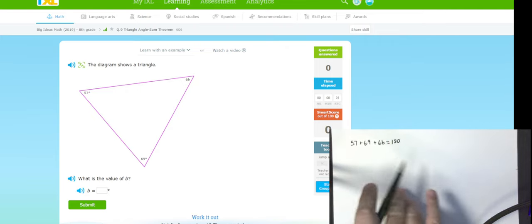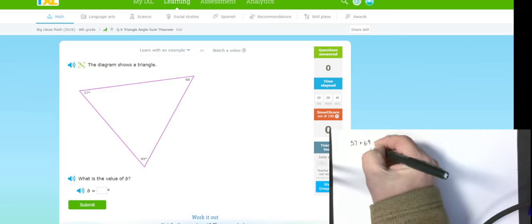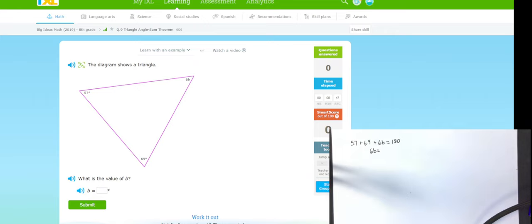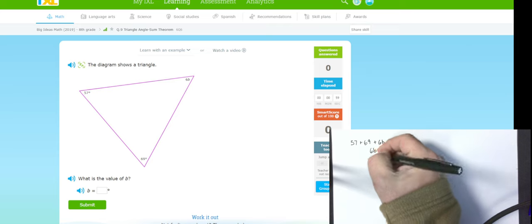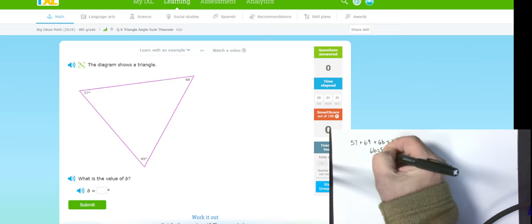So I know that 57 plus 69 plus 6B equals 180. I am going to subtract both of these numbers from 180. That's going to get me 6B equals something. So I'm using a calculator. You can use one too. 180 minus 57 minus 69 is 54. Divide both sides by 6 and I get B is 9.